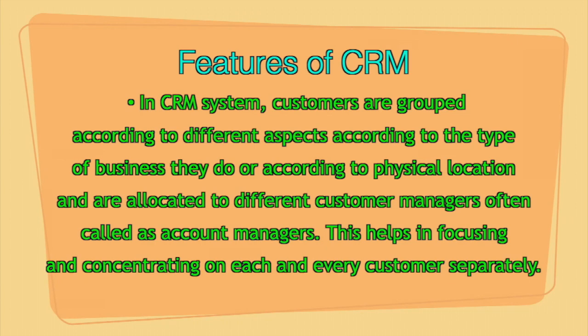Another feature of CRM is that customers are grouped — priority customers, institutional customers, government customers, military customers, and business customers. For example, airlines have frequent flyer programs for those who fly regularly. We can also categorize customers by location: metropolitan, rural, or urban. Accordingly, we can target those customers using eCRM packages and assign sales persons as account managers — one person handles metropolitan customers, another handles rural customers.